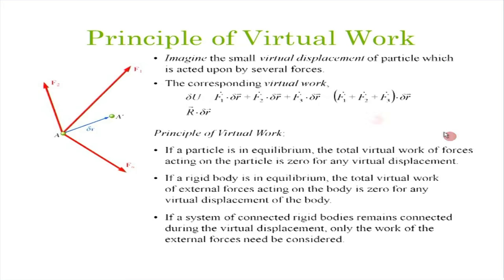Turning the argument around: if a particle has forces F1, F2, F3 acting on it, and the virtual work for any arbitrary virtual displacement is zero, then R·δr = 0 for any δr, which immediately implies R = 0. So R = 0 means virtual work is zero for any δr, and virtual work zero for any δr means R = 0. Newton's laws of equilibrium and the Principle of Virtual Work are equivalent — each implies the other — and these methods are far more powerful in many scenarios.